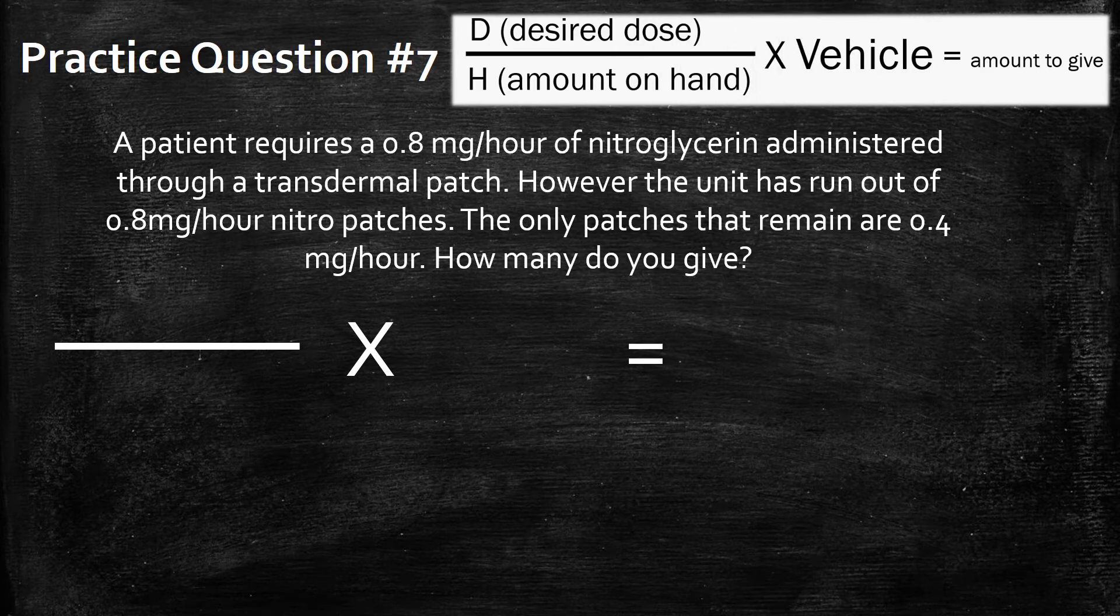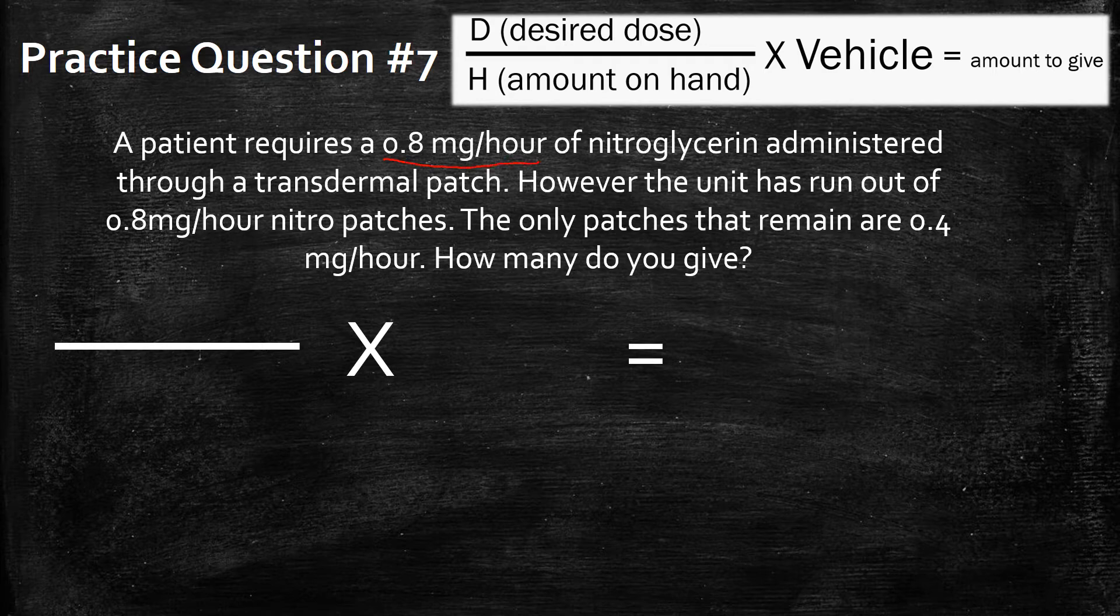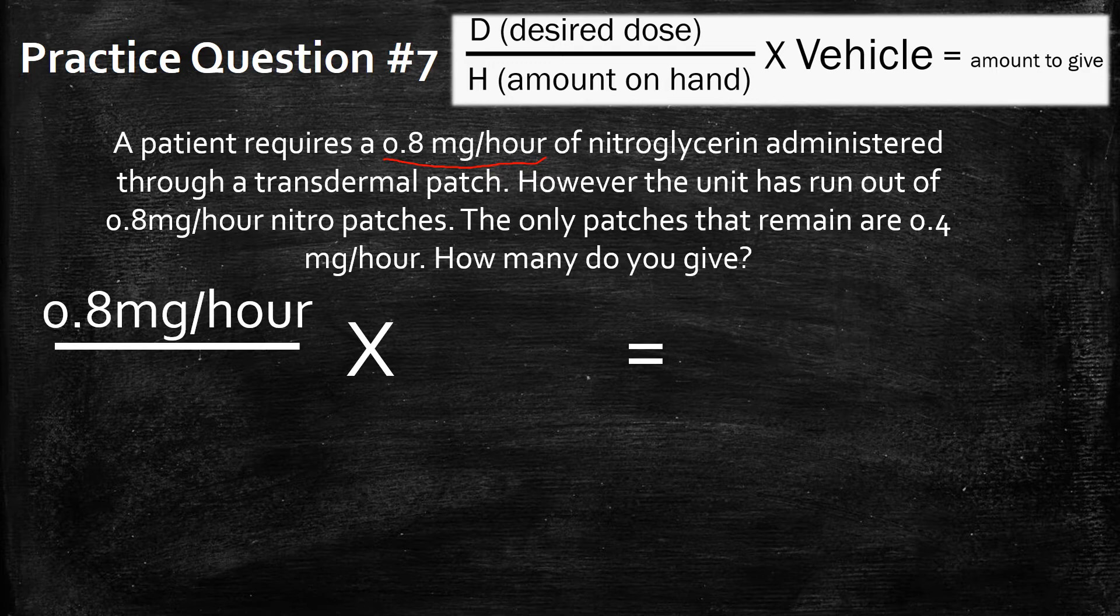The desired dose on hand. Well, it's what they require, obviously. So that's going to be 0.8 mg per hour. That's how patches work. They give you a certain amount of medication per every hour that you wear them. We're going to put that at the top of the fraction.